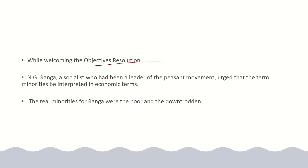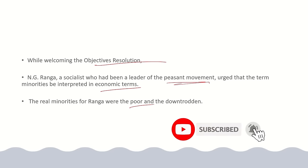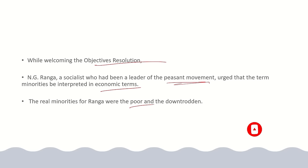While welcoming the Objectives Resolution, N.G. Ranga, who was a socialist and leader of the peasants' movement, said: why are you defining minority on the basis of religion — whether Hindu or Muslim? You should define minority and majority in economic terms, meaning those who are poor and those who are rich. No matter whether that poor person is Hindu, Sikh, or Muslim — if they are poor, consider them a minority.